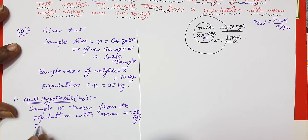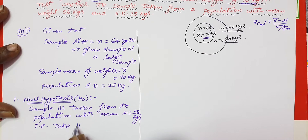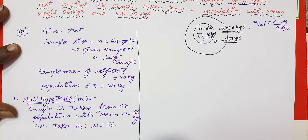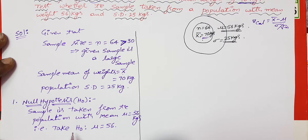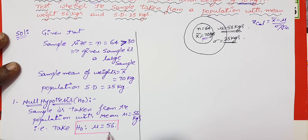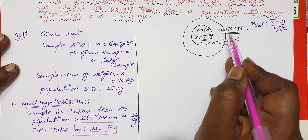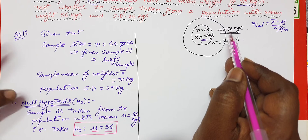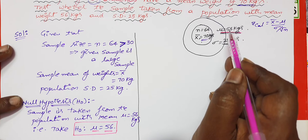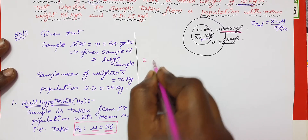We can take the null hypothesis H0 as mu is equal to 56. We assume the null hypothesis: mu value is 56.